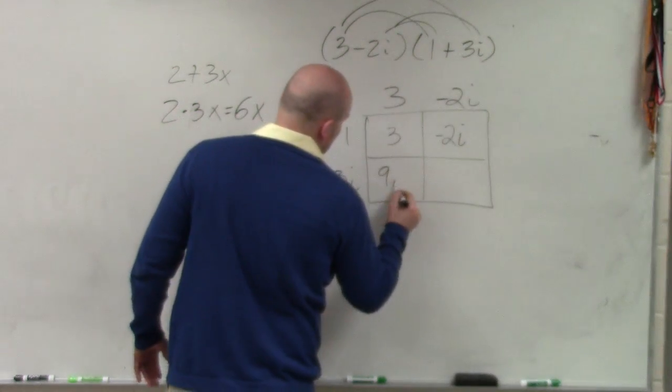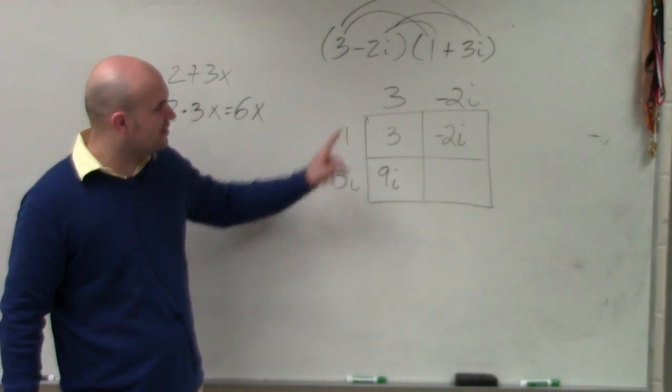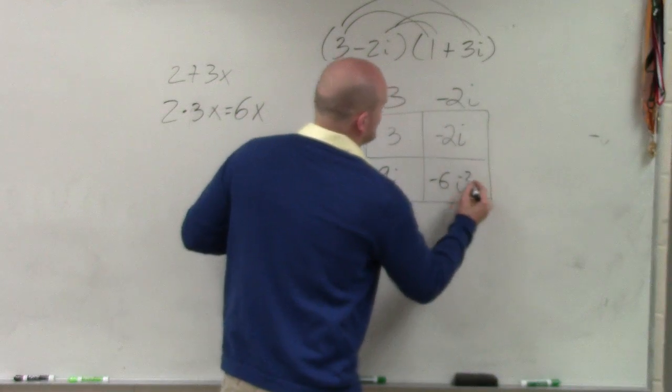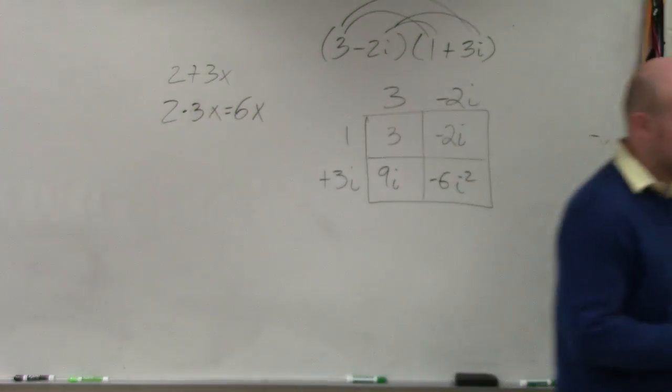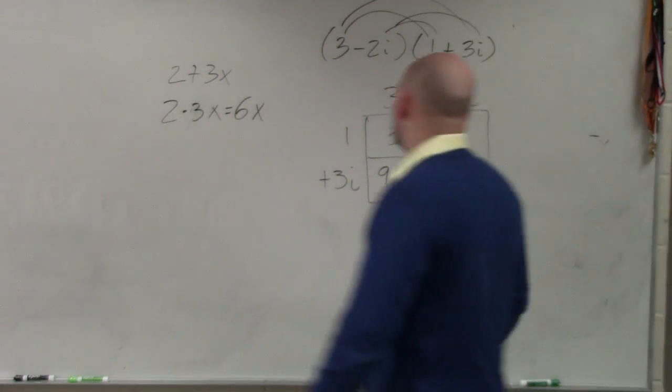3 times 3i is 9i. And then over here, we have negative 2i times 3i, which becomes negative 6i squared, right? Just like you would have x times x is x squared, i times i is i squared. Now remember what I talked about a second ago. Remember what I talked about when we were talking about i, i squared, i cubed, and so forth.